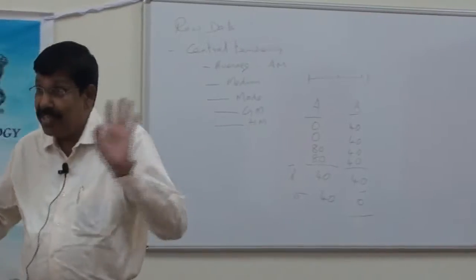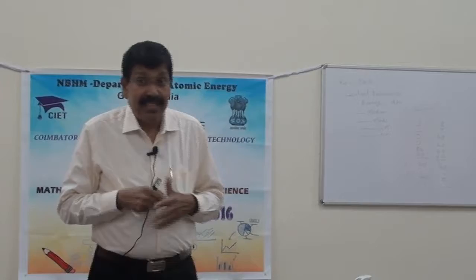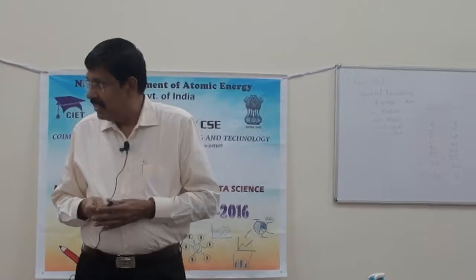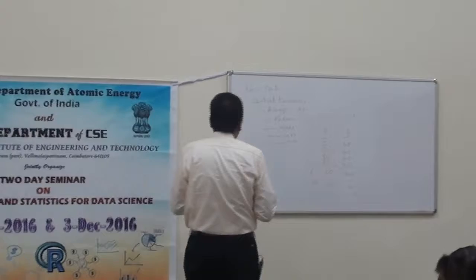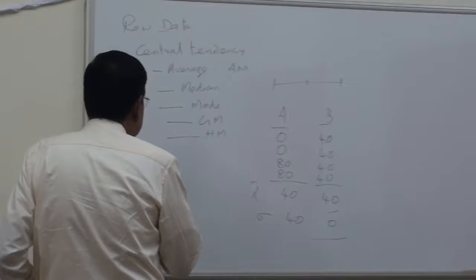There is no deviation at all; all the students have scored 40. That is more or less strong information he has. Therefore, we need another set of observations, another set of constants called measures of dispersion.